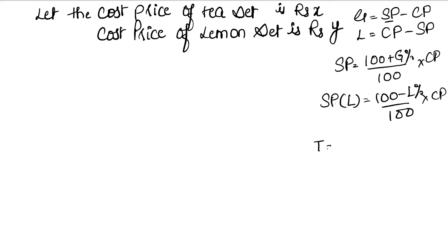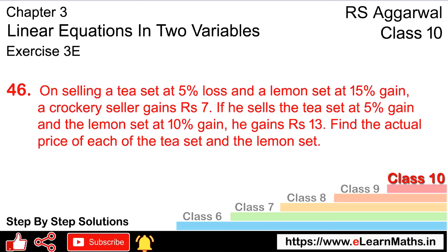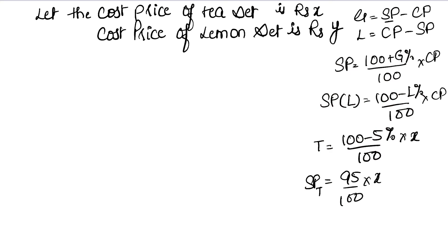Tea set पे 5% loss है, तो SP of tea set = (100 − 5) / 100 × X = 95/100 × X. इसी तरीके से SP of lemon set निकालेंगे. Question कह रहा है: on selling a tea set at 5% loss and lemon set at 15% gain, he gains rupees 7.